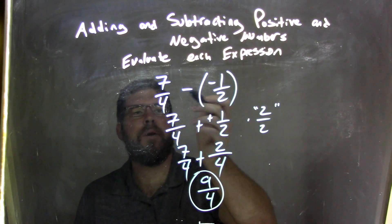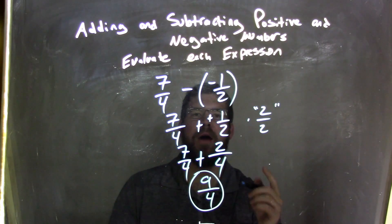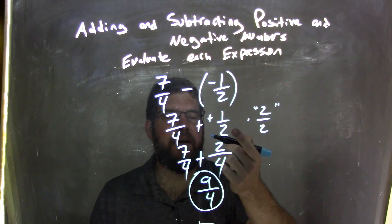So 9 fourths being our final answer, let's recap. We have 7 over 4 minus a negative 1 half. So subtracting a negative is the same thing as adding a positive. So we have plus 1 half here.